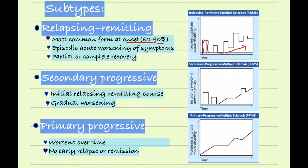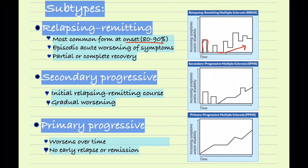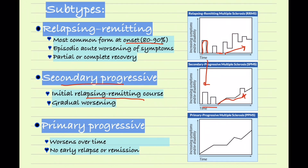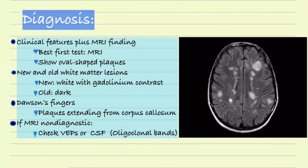The disease worsens after each attack. The second subtype is called secondary progressive, where patients begin with relapsing-remitting but then gradually develop a worsening course. Looking at the graph, the patient may have similar attacks to relapsing-remitting at the start, but then symptoms worsen over time — this is secondary progressive. The third subtype is primary progressive, in which patients do not begin with relapsing-remitting episodes; they simply begin with a steady worsening of the disease.